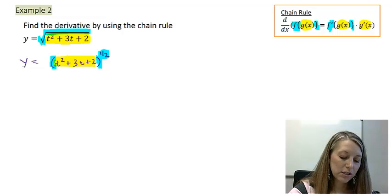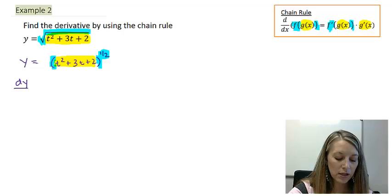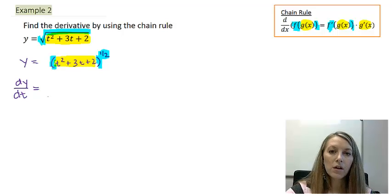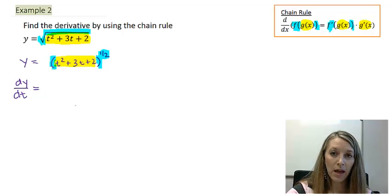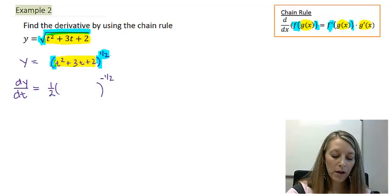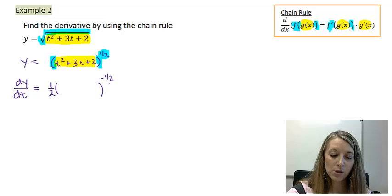First things first, my notation. Typically when we use y, the derivative notation is dy/dx. But my variable here is not x, it's t, so this notation is dy/dt. The derivative of my outside — the derivative of something to the one-half power — I pull my power down in front and subtract one from my original power. So one-half comes down in front, and one-half minus one gives me negative one-half as my new power.